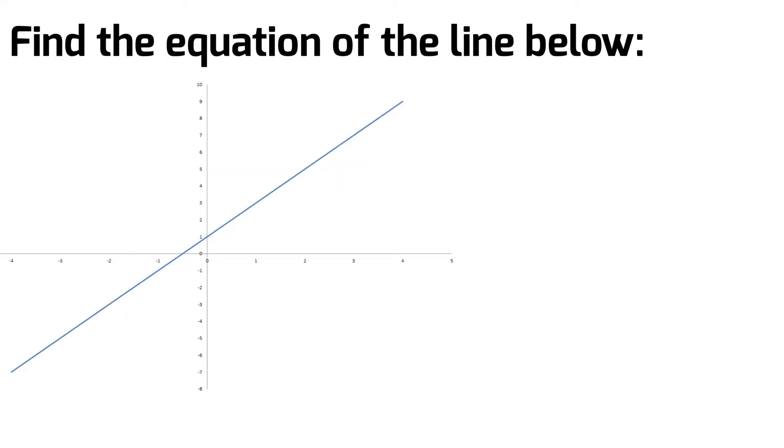We're asked to find the equation of the line below, so the initial thing I do is look at this graph and this line and say it's an increasing line. The first step I outlined before was to find the slope, which is m, and we find that by dividing the rise by the run.